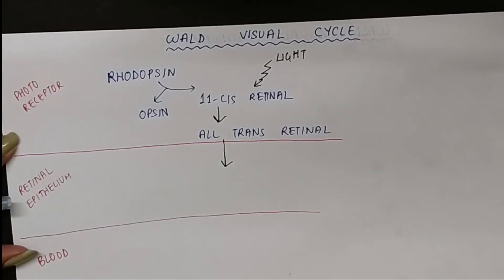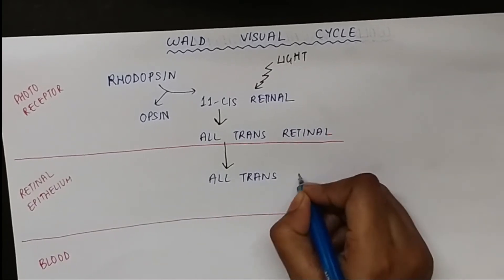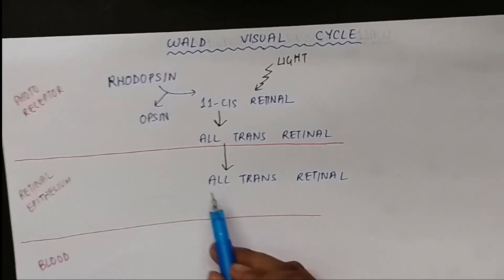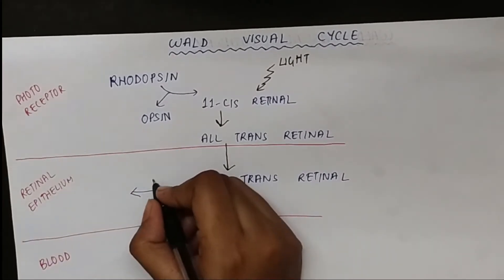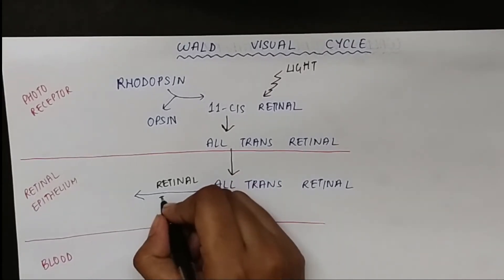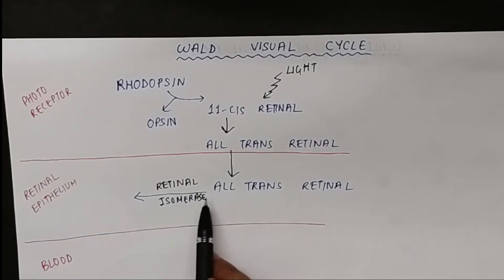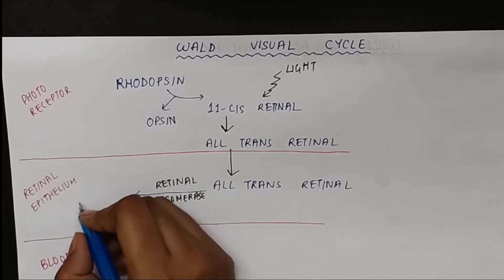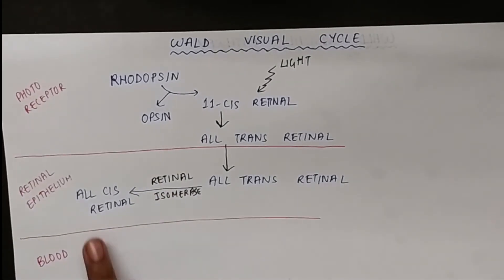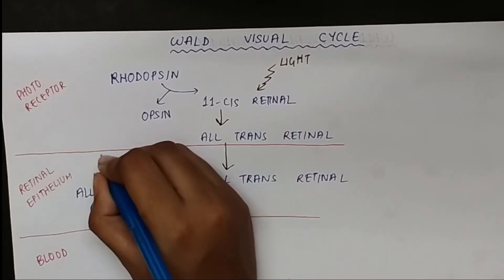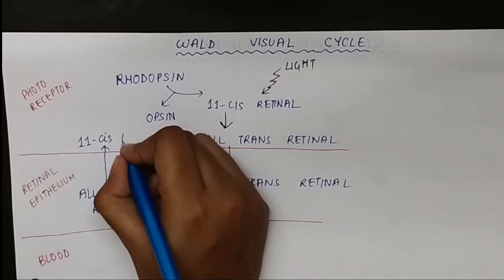Moving to the retinal epithelium: all-trans retinal is transferred to the retinal epithelium, where with the help of the enzyme retinal isomerase, it is converted into all-cis retinal. This all-cis retinal can then go back into the photoreceptor, where it changes into 11-cis retinal.